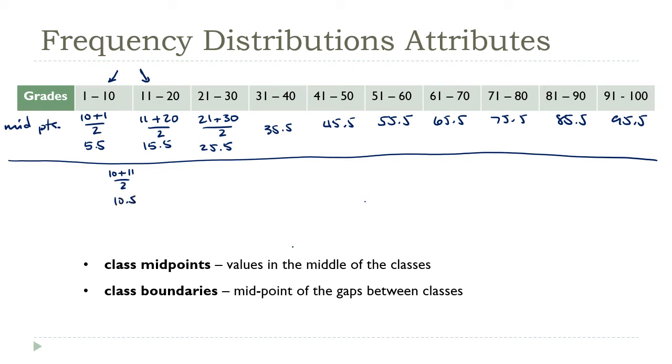And the next one, the upper class bound of this second class would be 20 plus 21 divided by 2. That's 20.5. The next class boundary would be 30 and 31 divided by 2, which is 30.5.